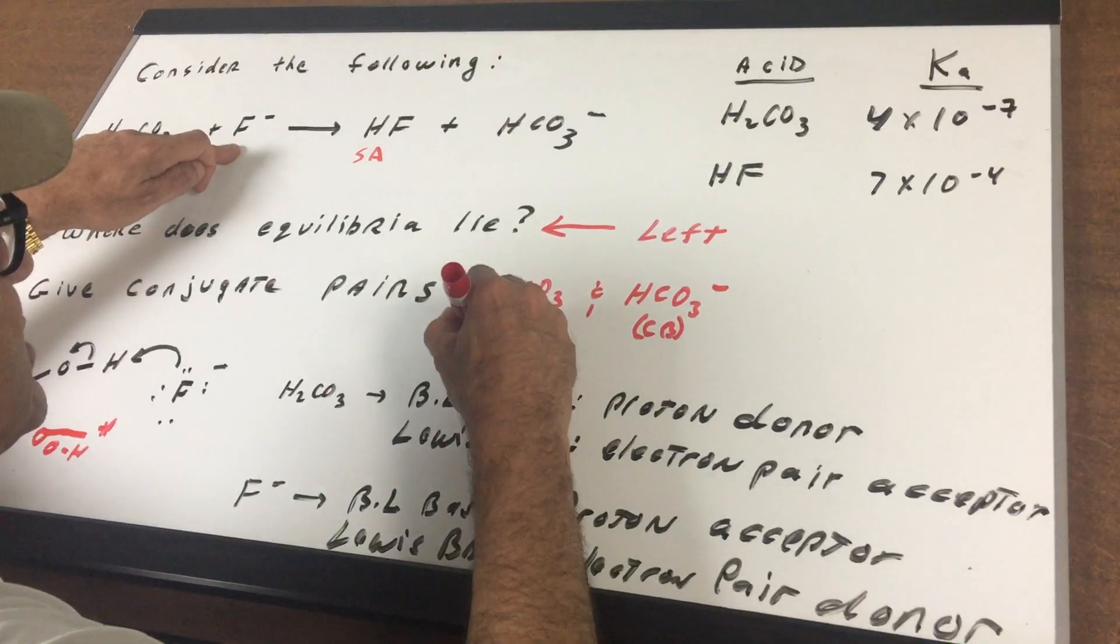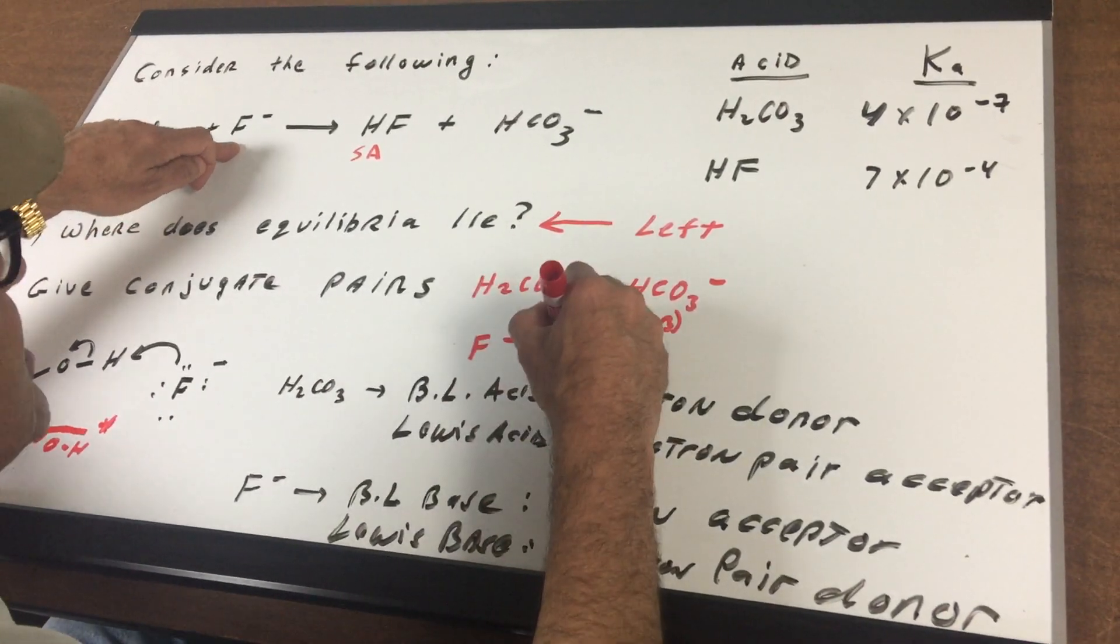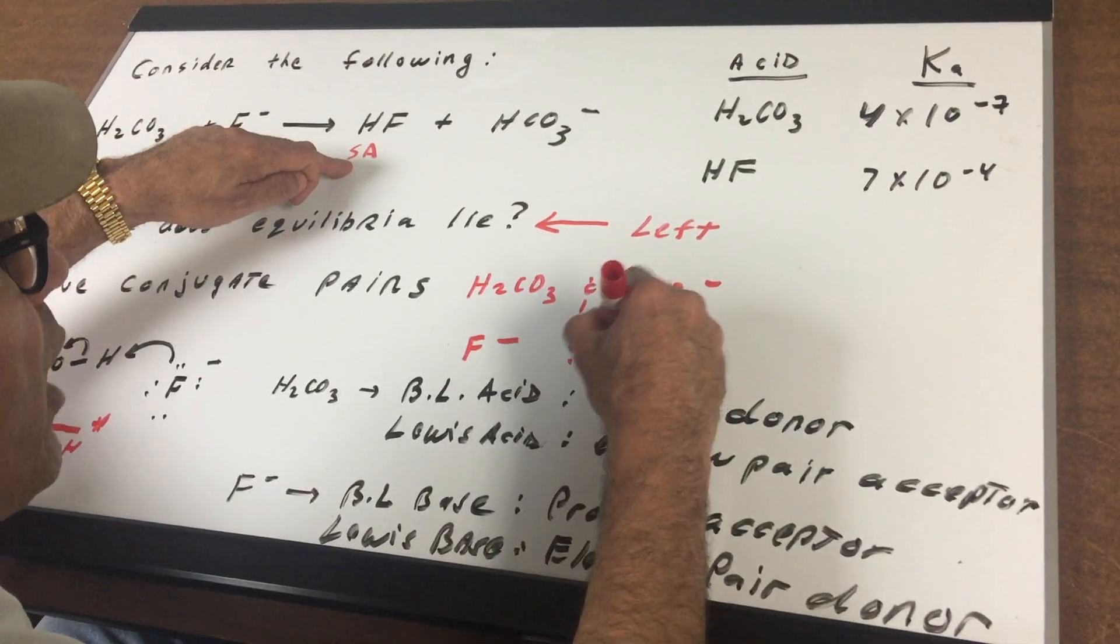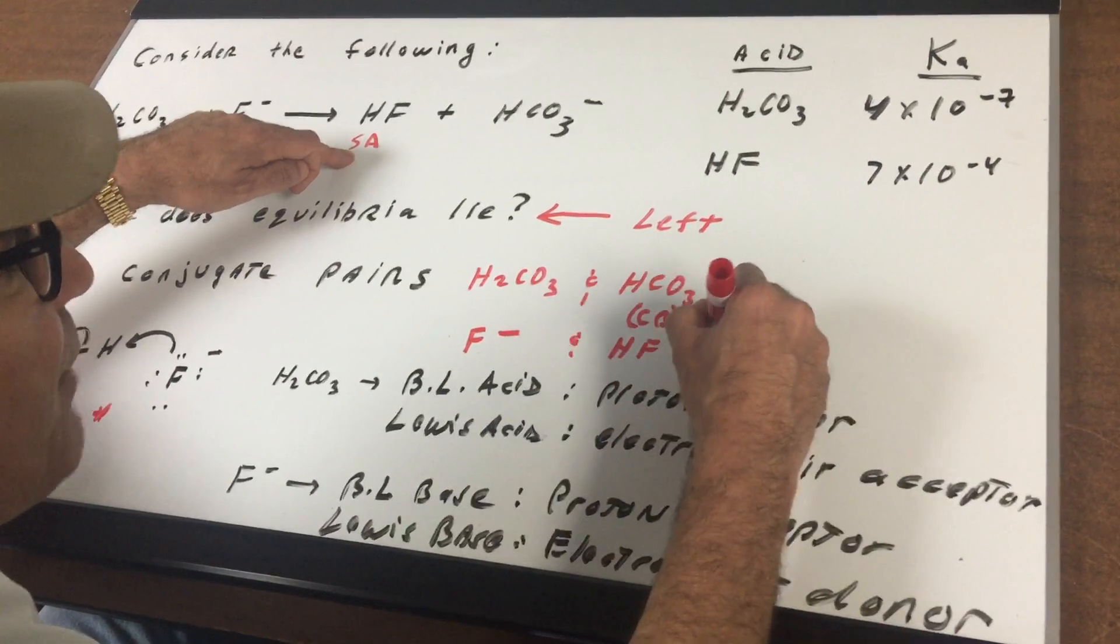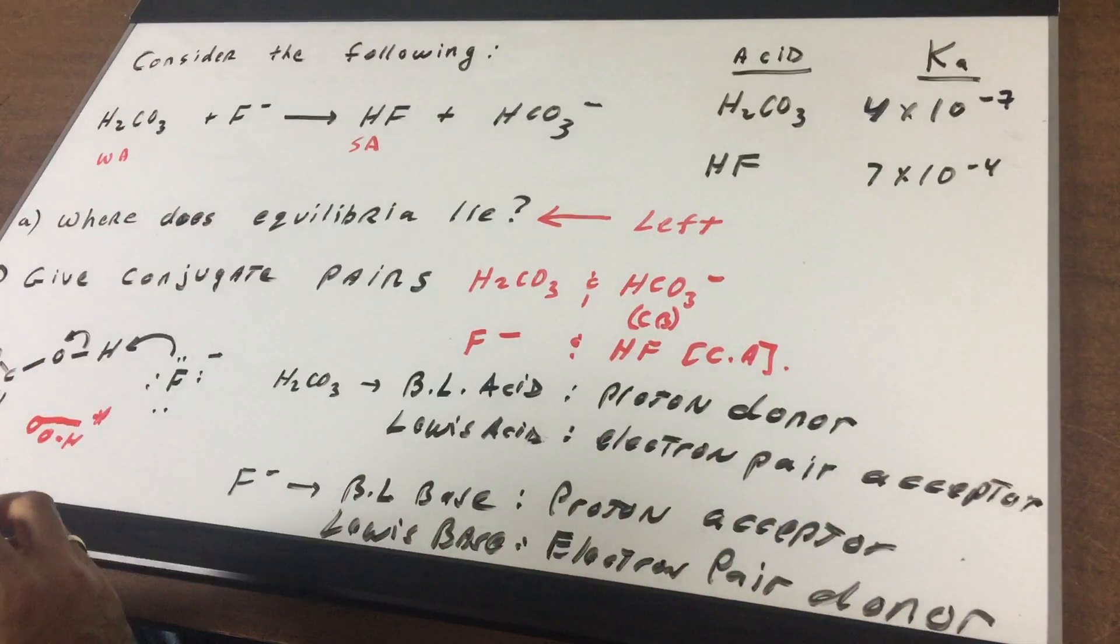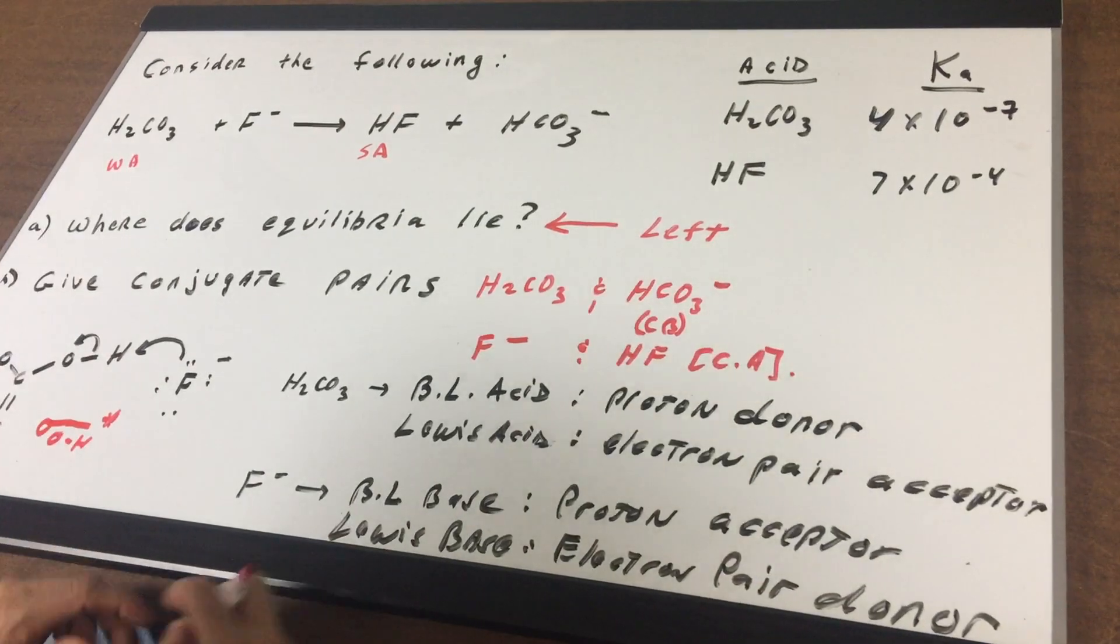And then likewise, F⁻ is a base, and therefore HF would be the conjugate acid. Very important question.